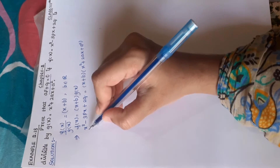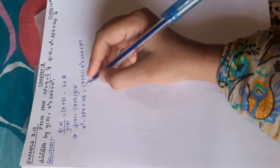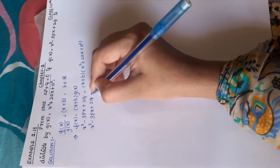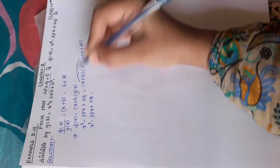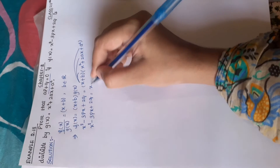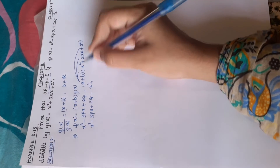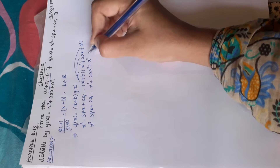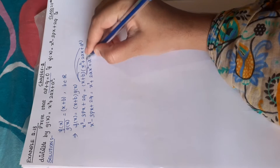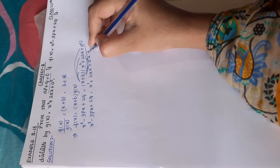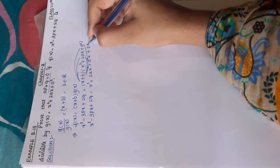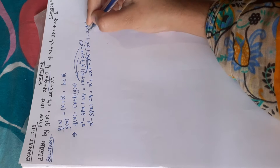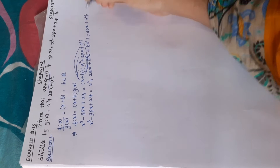Expanding the right-hand side: x plus b into x square plus 2ax plus a square gives x cube plus 2ax square plus a square x plus bx square plus 2abx plus a square b. So the expanded form is x cube plus 2ax square plus bx square plus a square x plus 2abx plus a square b.